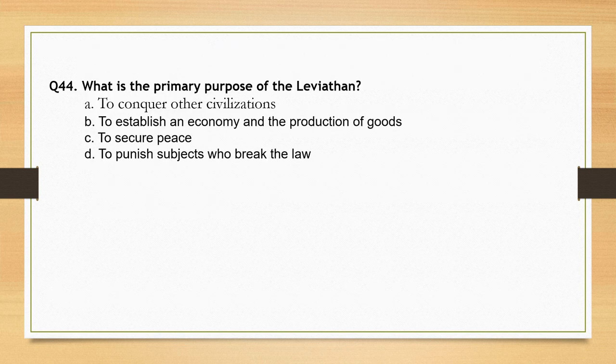What is the primary purpose of the Leviathan? As you know, Leviathan is the major work of Hobbes and very important. Options: to conquer other civilizations; to establish an economy and the production of goods; to secure peace; to punish subjects who break the law. The correct option is option C: to secure peace.